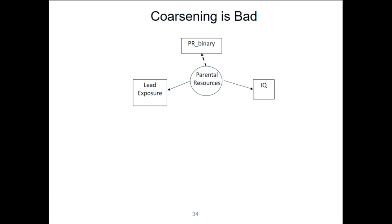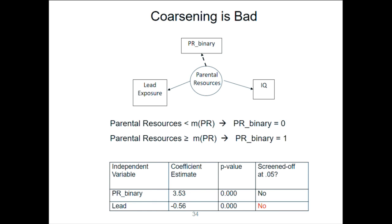Now I want to go into what happens when I coarsen. Here's a case where parental resources is imagined to be continuous, but instead I measure it on a binary scale — each household is either bad or good in parental resources, low or high, zero or one. I've projected a continuous thing onto a discrete scale with two values. Then I put that into the same regression and I have the same problem: lead still looks significantly associated with IQ even when I statistically control for this binary variable.